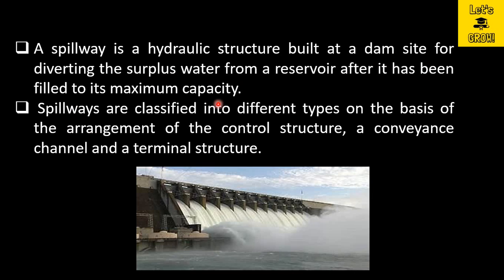been filled to its maximum capacity. This is the dam, and in the upstream there is a reservoir. Whenever water comes from the upstream and the water level of the reservoir increases, and when it reaches up to the normal pool level, whatever excessive water is coming will be released from the spillway. These structures constructed in a dam are called spillways, used to divert surplus water from the reservoir whenever the maximum capacity is fulfilled. Spillways are classified into different types on the basis of the arrangement of the control structure, a conveyance channel, and a terminal structure.